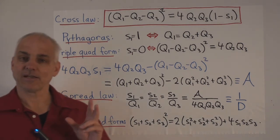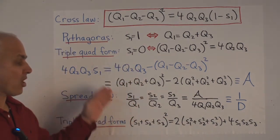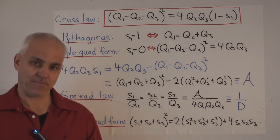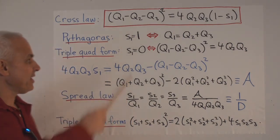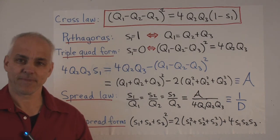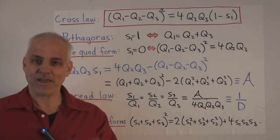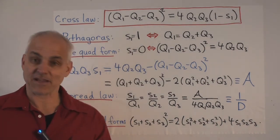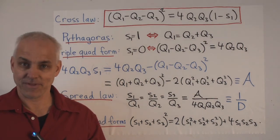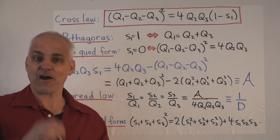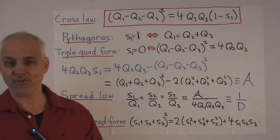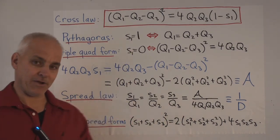So I want to emphasize that these laws are all consequences of the cross law. So whenever we've proven the cross law, then these are immediate. This is going to be really important for us as we venture into a relativistic kind of geometry soon. So we're going to establish the cross law first, and then these are going to be automatic bonuses for exactly the reasons we've laid out here.